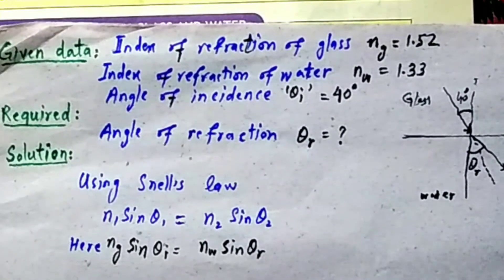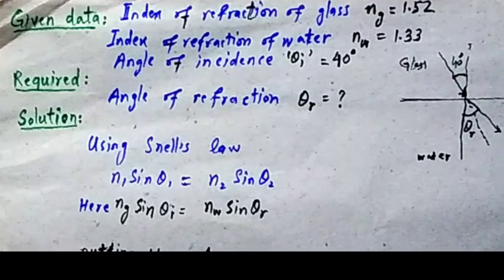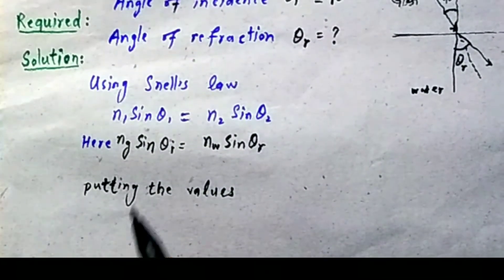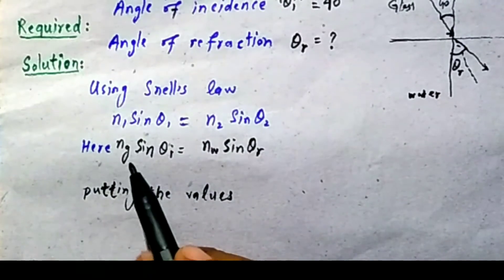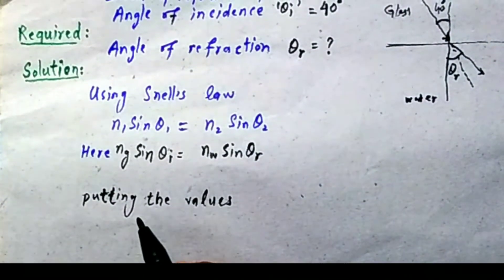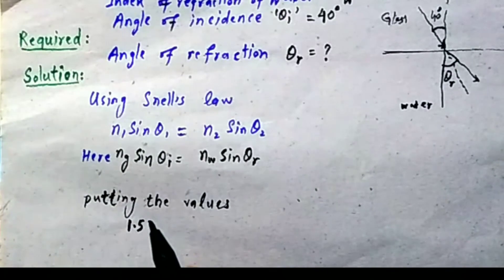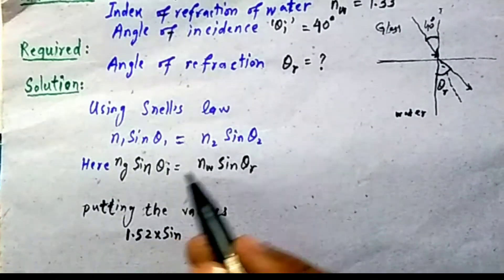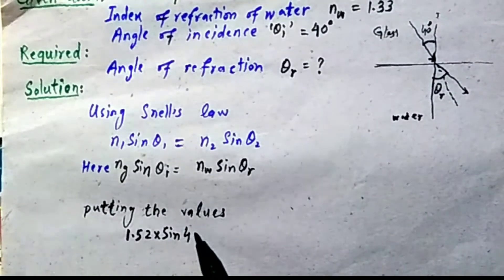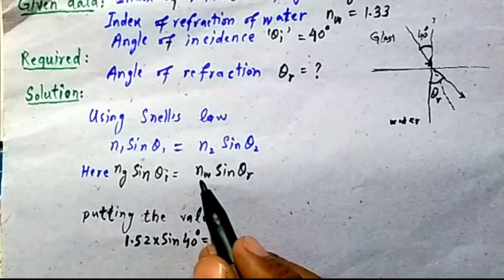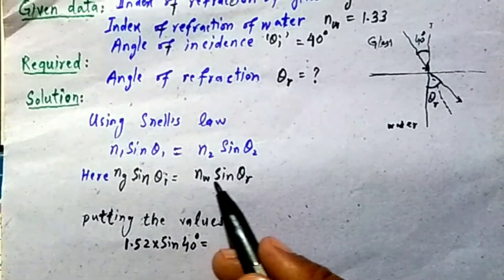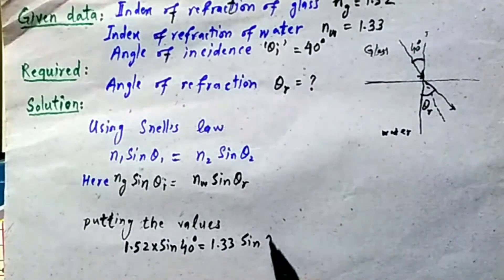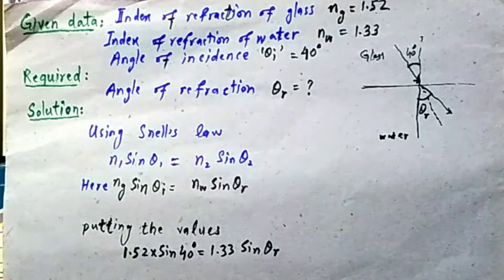Applying Snell's law with values: NG = 1.52, theta_i = 40 degrees, NW = 1.33. So: 1.52 × sin(40°) = 1.33 × sin(theta_R). We substitute all given values into the equation.